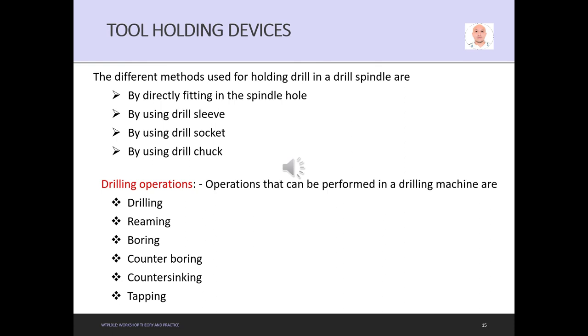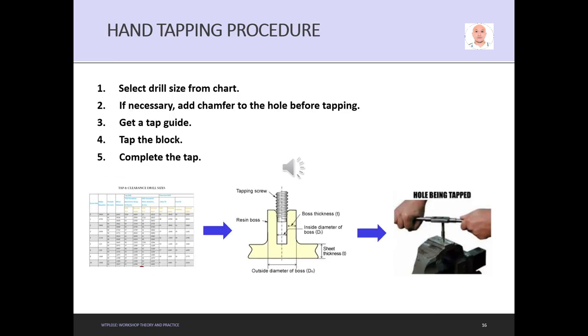Tool holding devices: Different methods used for holding drills in a drill spindle are by directly fitting in the spindle hole, by using drill sleeve, by using drill socket, and by using drill chuck. The drilling operations that can be performed in drilling machines are drilling, reaming, boring, counter boring, counter sinking, and tapping.